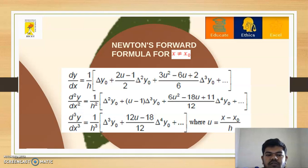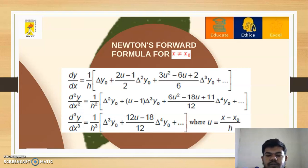Newton's forward formula for x not equal to x0: the first derivative formula is dy/dx = (1/h) [Δy₀ + ((3u² - 6u + 2)/6) Δ³y₀ + ...]. The second derivative formula is d²y/dx² = (1/h²) [Δ²y₀ + (u-1)Δ³y₀ + ((6u² - 18u + 11)/12) Δ⁴y₀ + ...]. Similarly, the third derivative formula is given below. Here, u is defined by the formula u = (x - x₀)/h.